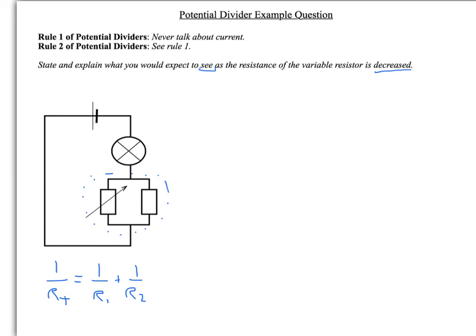Using our parallel resistor rule, 1/RT = 1/R1 + 1/R2. What you can actually see here is that as this variable resistor is decreased, the resistance of this whole network of resistors here, this parallel network, is also going to decrease.